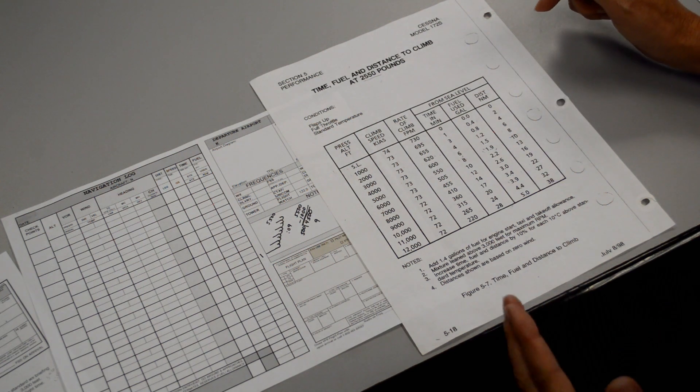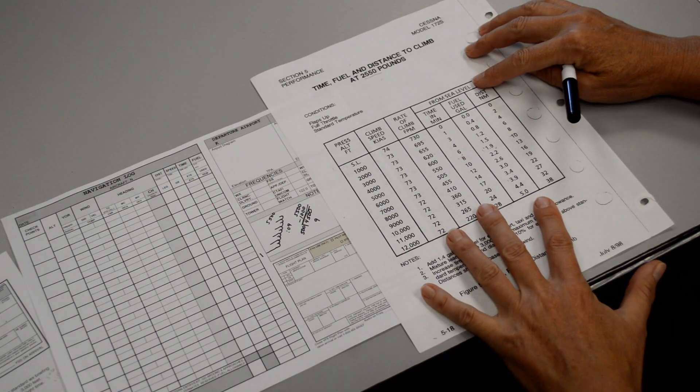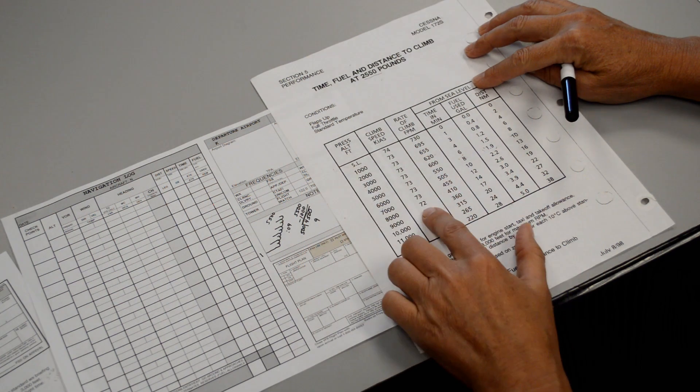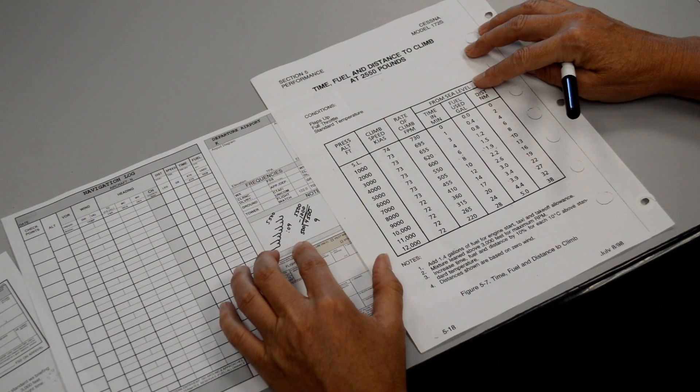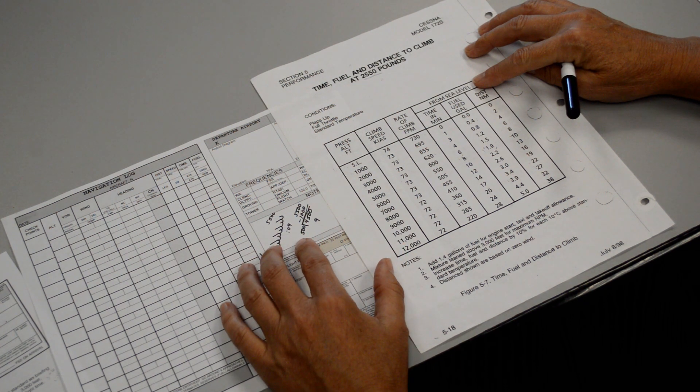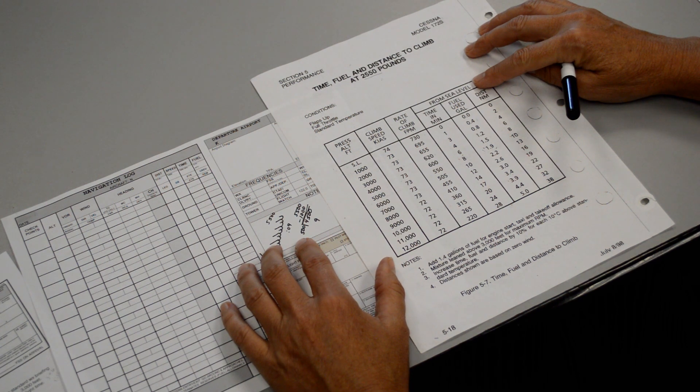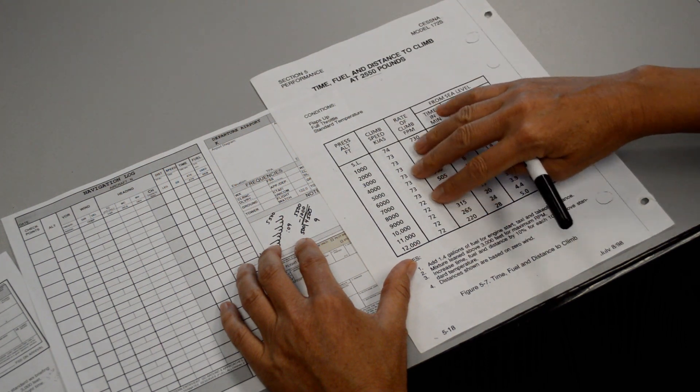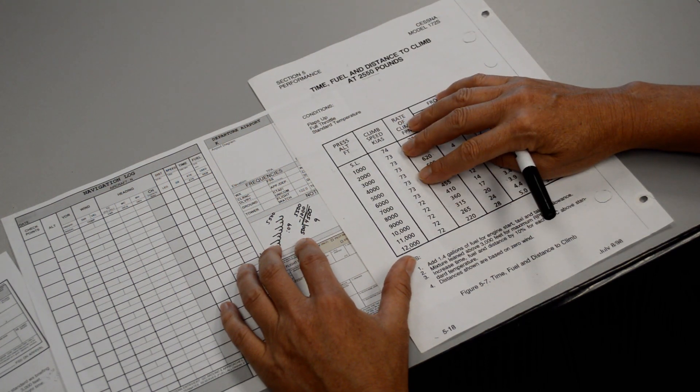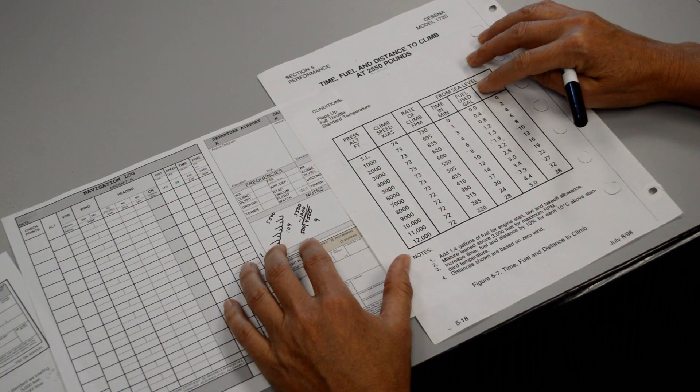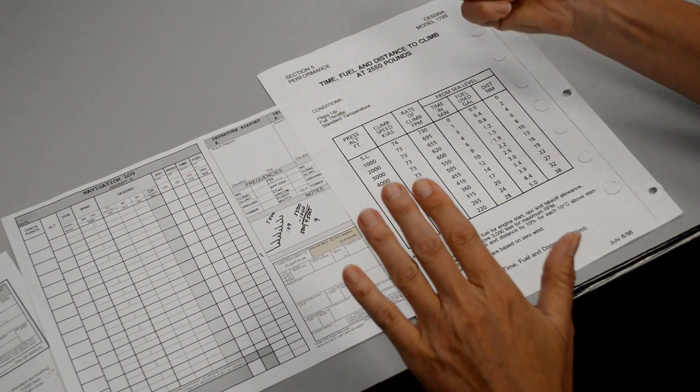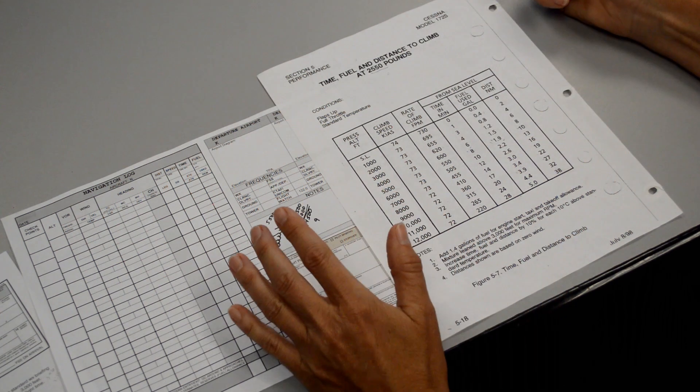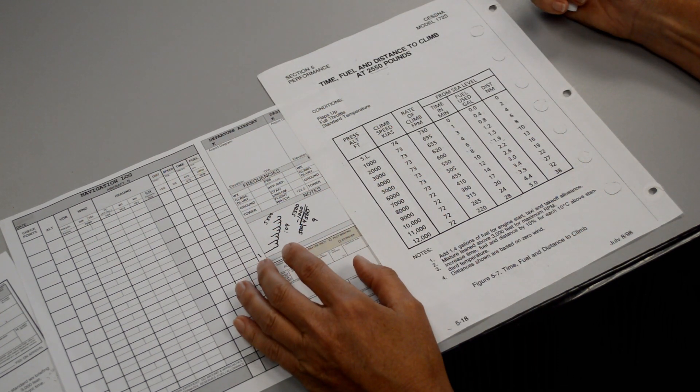So we can use the time, fuel, and distance to climb chart from the POH if we wanted to climb out at this particular speed, or we could use numbers that we're familiar with by just flying the plane regularly. Also we typically climb out at an airspeed closer to 80 knots, which is a normal climb speed. This is more of a VY climb speed. And by climbing out closer to 80 knots or so, it allows the nose of the airplane to have a lower angle of attack, which allows more airflow to come into your engine to help keep your engine cool, especially on these hot summer days.